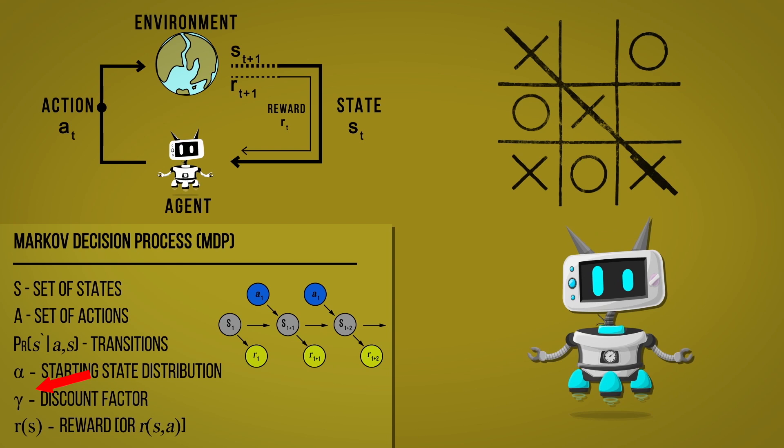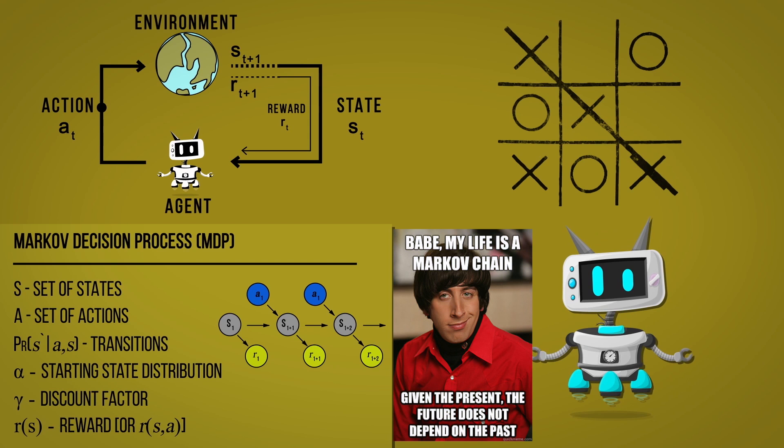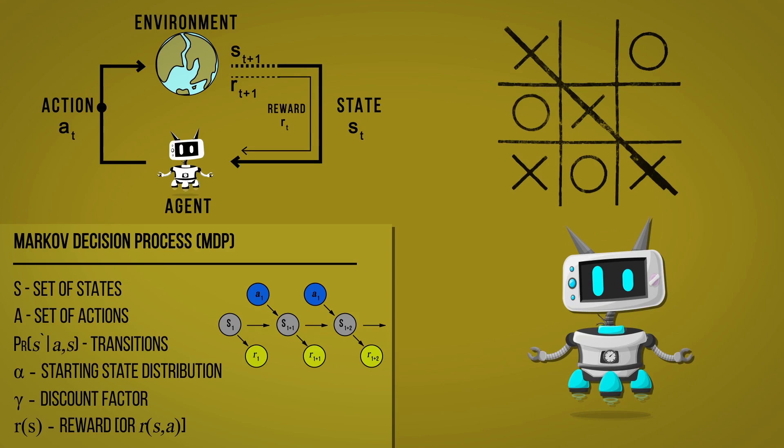We can call this formalization a Markov decision process. It's a way of framing a problem where at each time step an agent is in some state and may choose some action. This will probabilistically transition the agent into the next state and give some reward as a function of the transition. Crucially, the transition obeys the Markov property, meaning the transition and reward probabilities are only dependent on the pair S and A, and not dependent on the entire history of previous states. In other words, the state S should encode all of the important information to be able to make good decisions on which action to take.